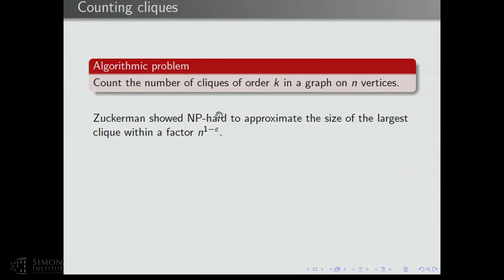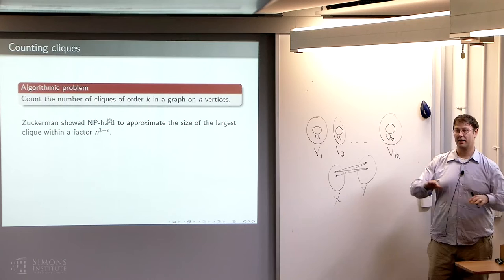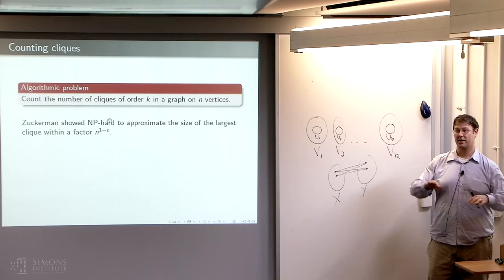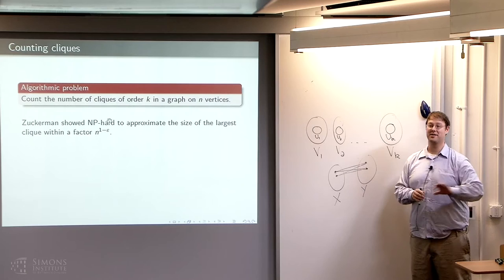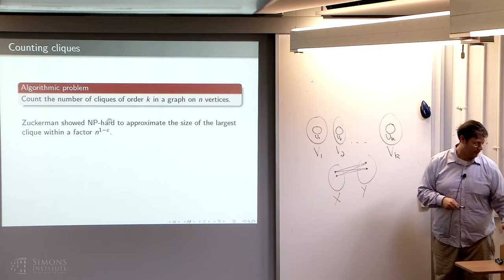A natural question is how fast can we approximate the count within some additive error. There can be up to n-choose-k cliques — on the order of n-to-the-k. A very simple randomized algorithm: sample 10/epsilon-squared random k-sets of vertices. Your sample will have a binomial distribution around the density of k-cliques, and with very good probability your observed density is close to the density of k-cliques in the whole graph. However, this only gives 99% certainty. Removing randomness — getting deterministic algorithms — is a big problem in complexity theory.